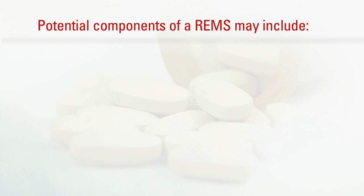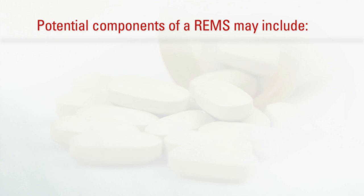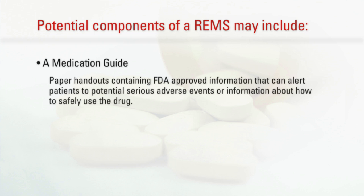Potential components of a REMS may include a medication guide — paper handouts containing FDA-approved information that can alert patients to potential serious adverse events or information about how to safely use the drug.